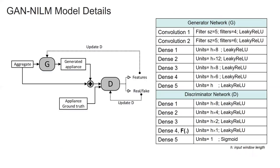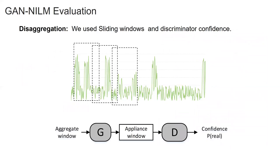This table shows the GAN-NILM details. It's worth noting that the generator has two convolution layers, which adds translational invariance to allow recognizing the appliance if its position is shifted within the input window. The layer used for feature matching is DEN4 in the discriminator network, and this layer should have the same size as the input window edge. Generally in GAN-NILM, after training, the generator part should be able to generate fake samples without the need for the discriminator, which is normally thrown away.